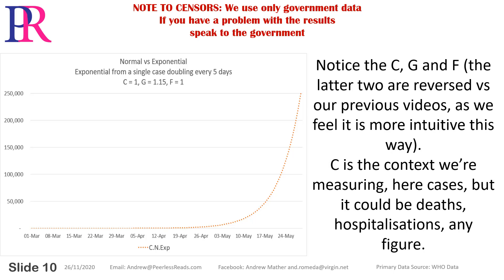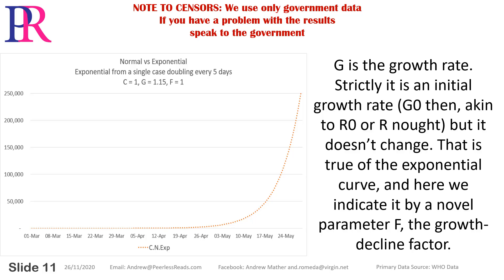They don't. Notice the C, G, and F — the latter two are reversed versus our previous videos, as we feel it is more intuitive this way. C is the context we're measuring here: cases, but it could be deaths, hospitalisations, any figure. G is the growth rate.